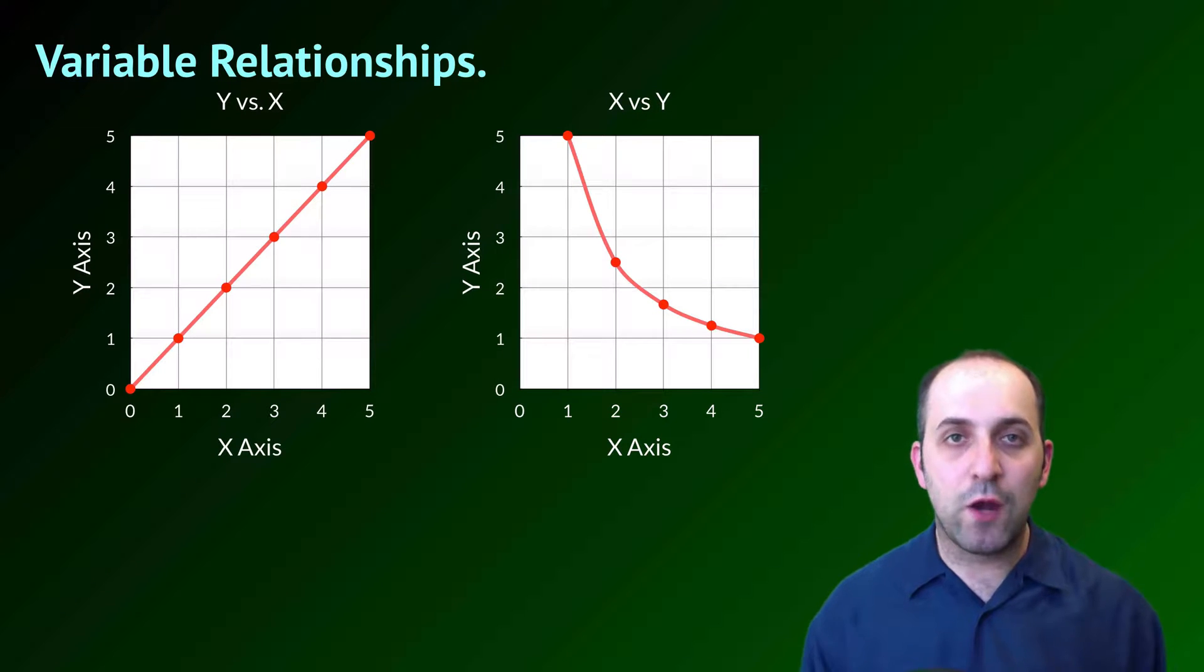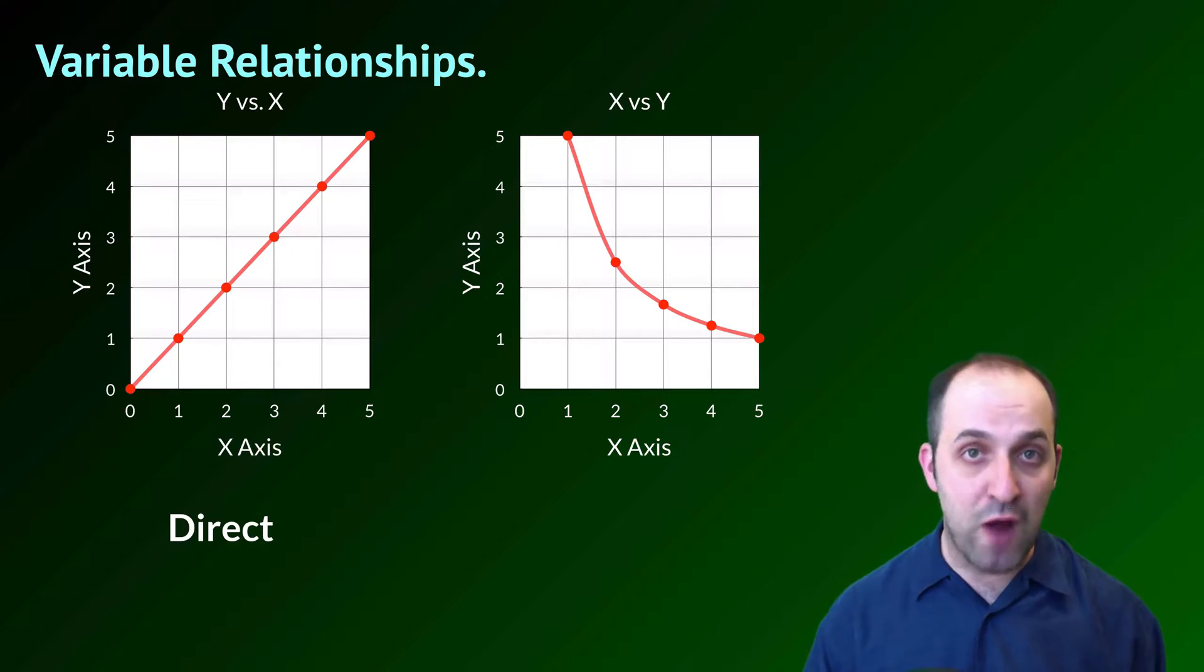The only other thing that I want to talk about here are variable relationships. Here are two of the major variable relationships that you'll see in this class and in science in general. In the first one on the left, as one variable goes up, the other variable also goes up, or as one goes down, the other one also goes down. That's what we call a direct relationship.